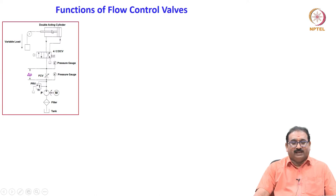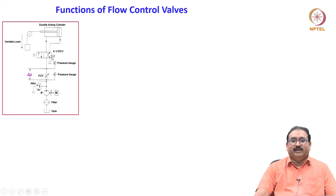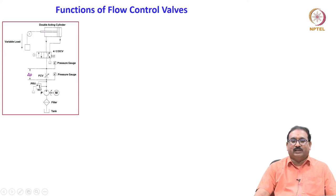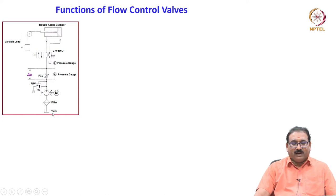Here I am showing a double-acting cylinder used to control a variable load through a 4/2 DCV, spring-centered. One flow control valve is placed between the pump flow and the DCV. This is a throttle type, and a pressure relief valve controls the main system pressure. The pressure gauges monitor the pressure across the flow control valve. There is always a delta P across the FCV; a filter and tank are also shown.